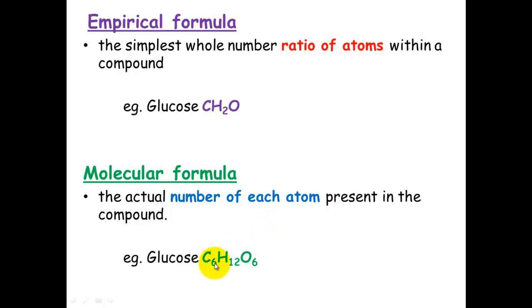Glucose's full molecular formula is C6H12O6. So you can see here, if you divide all of these numbers by 6, the simplest whole number ratio is 1 carbon, 2 hydrogens and 1 oxygen. Carbon divided by 6 is 1, hydrogen divided by 6 is 2, and oxygen divided by 6 is 1.